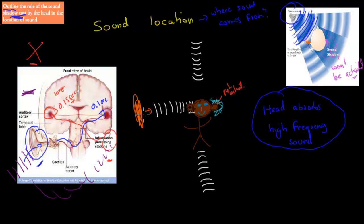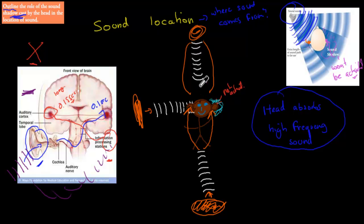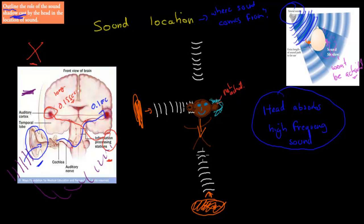If you are facing the direction of the source, it's pretty easy to know where it comes from. But if the source is directly in front or directly behind you, there's a problem — the sound comes into both ears equally. That means you can't distinguish whether it's coming from the front or the back, because both cases feel the same. You don't know where the sound is exactly coming from — it could be from behind or in front.